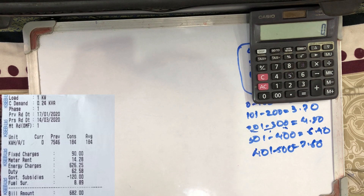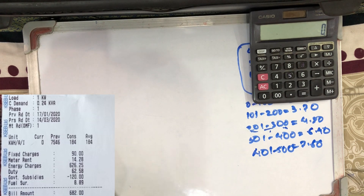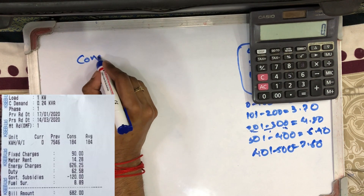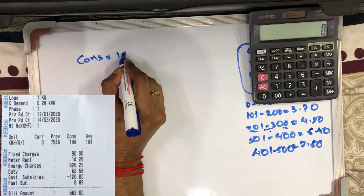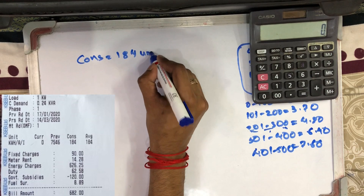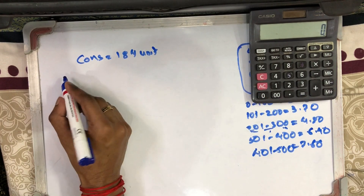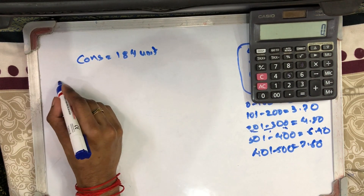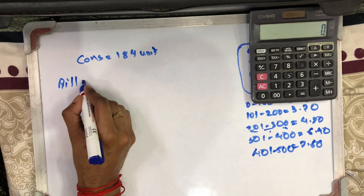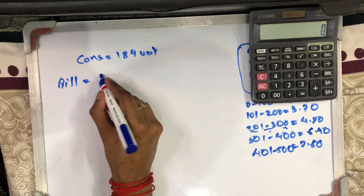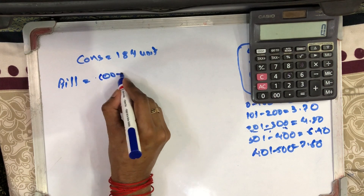Now let me show you the first thing. You can see that the consumption is 184 units — 184 units in 2 months. Let's take a look. You can see that it is 100 units. That is 100.